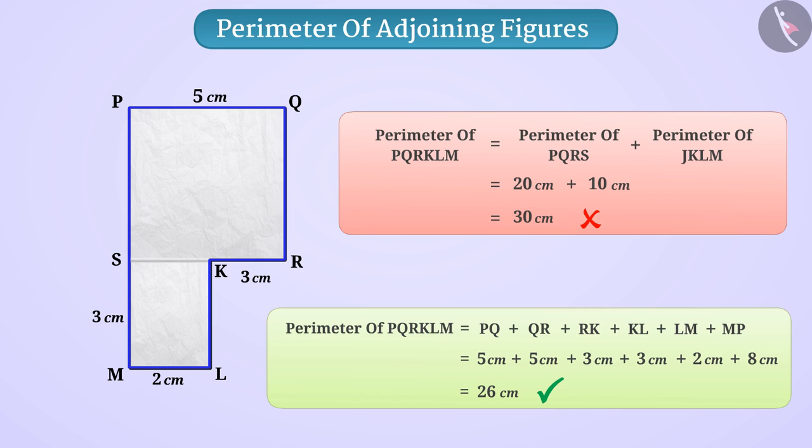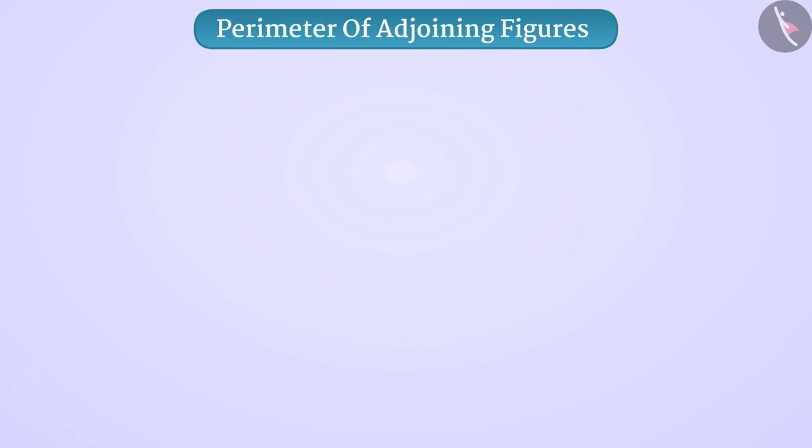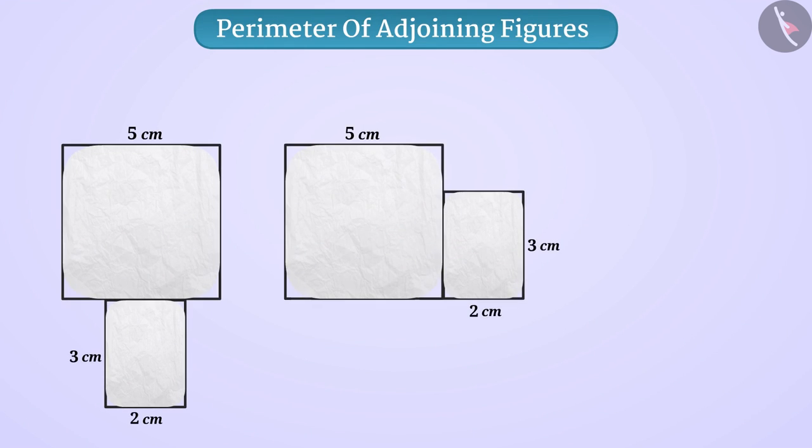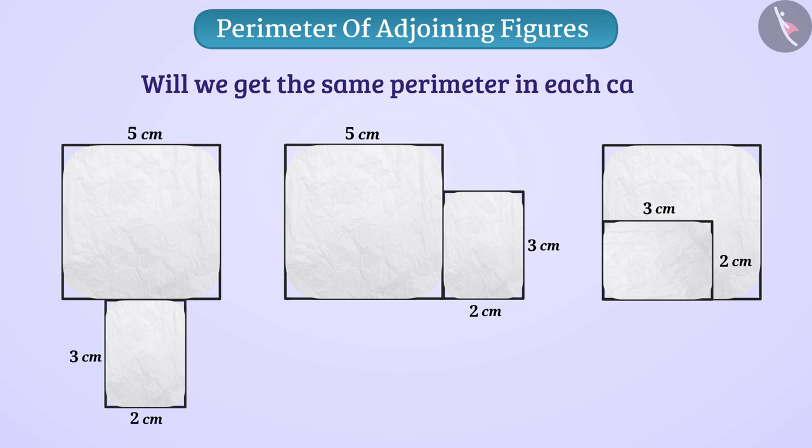Now, find out for yourself that if we enclose the rectangle in this way, in this way or in such a way, will we get the same perimeter in each case?